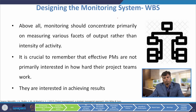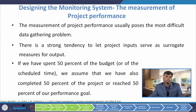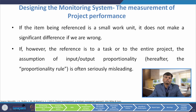Monitoring should concentrate primarily on measuring various facets of output rather than intensity of activities. Effective project managers are not primarily interested in how hard their project teams work — they are interested in achieving results. The measurement of project performance usually poses the most difficult data-gathering problem. There is a strong tendency to let project inputs serve as a surrogate measure of output — if 50% of the budget has been spent, we assume 50% of the project is complete. If the reference is to a task or the entire project, the assumption of input-output proportionality is often a seriously misleading concept.